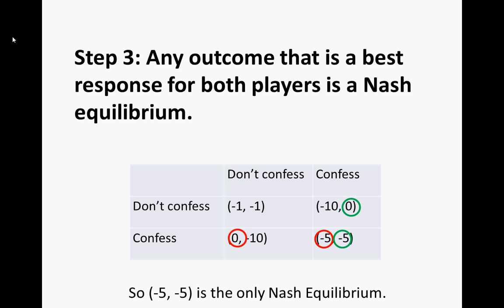Any ordered pair that has both numbers circled is going to be a Nash equilibrium. In this problem, negative 5, negative 5 is our only Nash equilibrium.